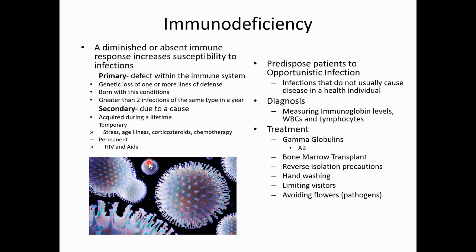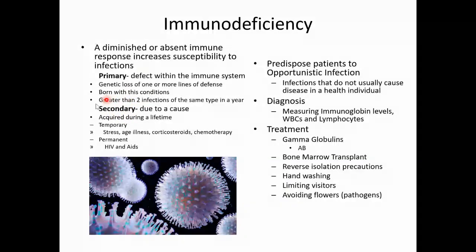Next is immunodeficiency — a diminished or absent immune response that increases susceptibility to infections. There are two types: primary and secondary. Primary is a defect within the immune system itself, like a genetic loss of one or more lines of defense — born with this condition. They often have greater than two infections of the same type in a year. This is like 'the boy in the bubble,' receiving immunoglobulins as a chronic treatment. The most common type we see is secondary immunodeficiency.